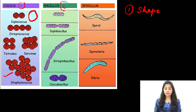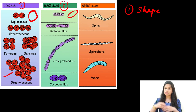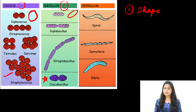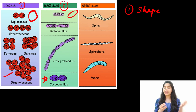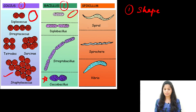The second type of shape is the bacilli or rod shape. Diplobacilli are two rod-shaped bacillus attached to each other. Streptobacilli are a chain of bacilli cells adhering together. Another interesting shape is the coccobacillus, which is a bacillus so small it starts resembling a coccus — having resemblance to both cocci and bacilli. Other shapes include spiral-shaped bacteria and vibrio bacteria.